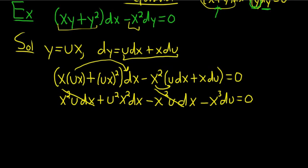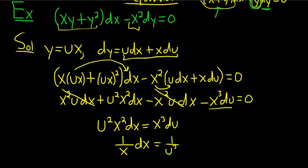So let's go ahead and solve it. We'll add this to the other side. So we get u squared x squared dx, and this is equal to x cubed du. We want to get all of the x's on one side by themselves. So divide by x cubed. That's going to give us 1 over x dx. And over here, it's going to give us 1 over u squared du. Dividing by x cubed gives us x squared over x cubed, which is 1 over x. Dividing by u squared gives us that.